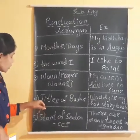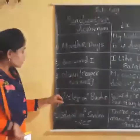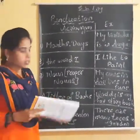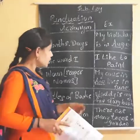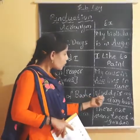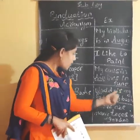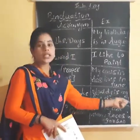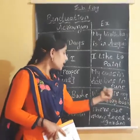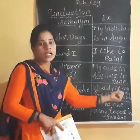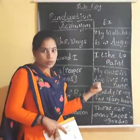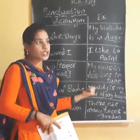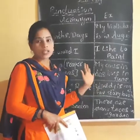The fourth acronym: T stands for titles of books or movies. For example, 'Nodi is my favorite storybook.' Nodi is the name of the book, so the first letter should be in a capital.